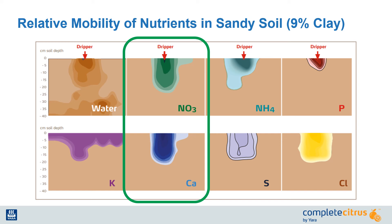Nitrate nitrogen and calcium move very similarly in the soil, and because they both are absorbed mostly by mass flow into the roots, the combination of both nutrients in one source, like calcium nitrate, can be an effective way to apply both key nutrients when the tree demands it.